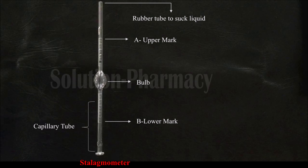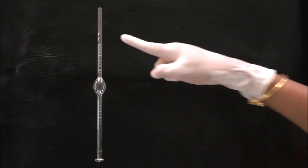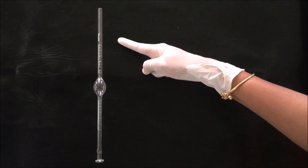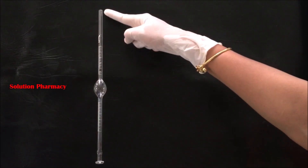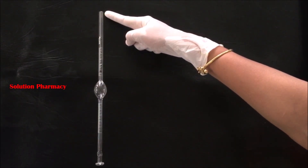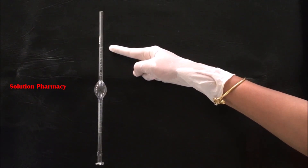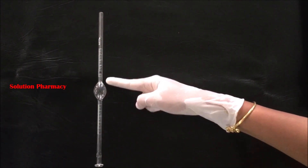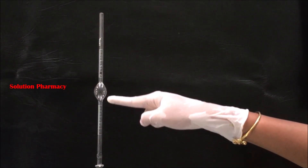So first of all, let's know about this stalagmometer. A stalagmometer is a glass capillary tube — a glass tube containing a capillary inside it. In the middle part there is a bulb. From the top of the stalagmometer, we attach a rubber tube to suck and fill the liquid. On the upper and lower sides of the bulb there is a graduation.